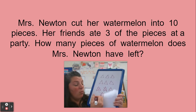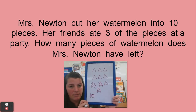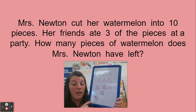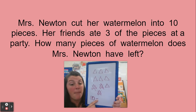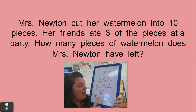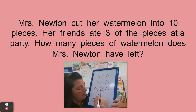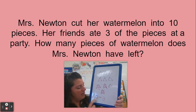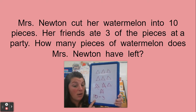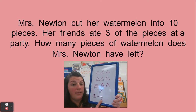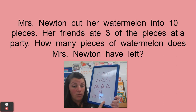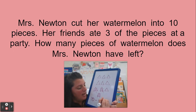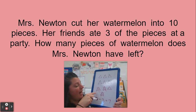Some people even wanted to write an equation. So they wrote 10 because that's what we started with. And then the symbol they used to represent take away was the minus sign. How many did we take away? Three pieces. This is the watermelon Mrs. Newton started with; these are the pieces her friends ate. And that is equal to, or the same as, the number seven — that's what is left.